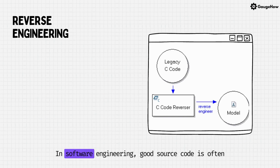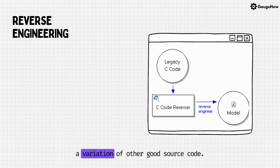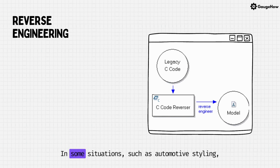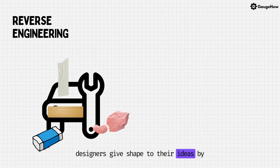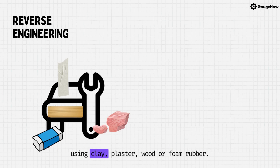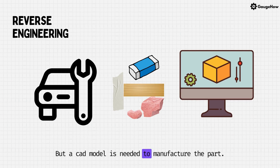In software engineering, good source code is often a variation of other good source code. In some situations, such as automotive styling, designers give shape to their ideas by using clay, plaster, wood or foam rubber. But a CAD model is needed to manufacture the part.